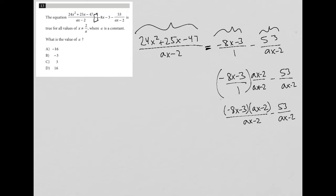Since I have a common denominator, I can combine the two fractions together so that now I have negative 8x minus 3, ax minus 2, all over ax minus 2.